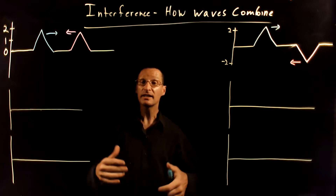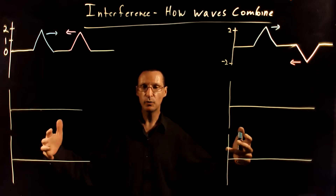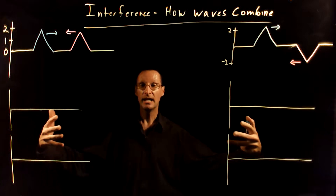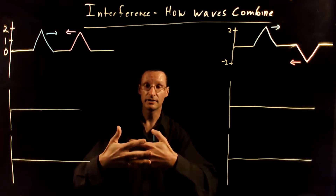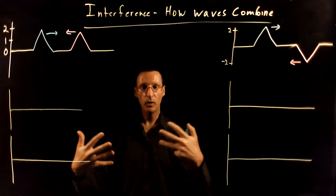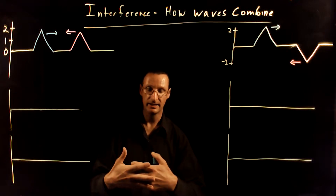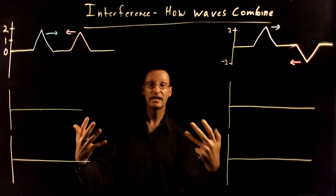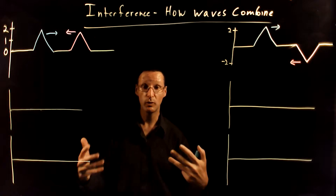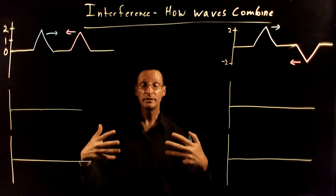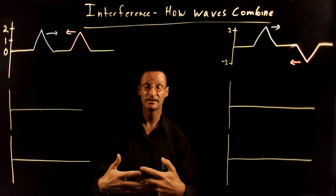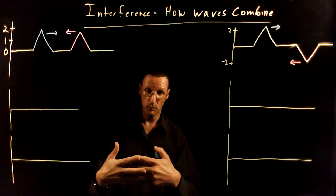Hey there, awesome physics students. Let's talk about what you do when you have two waves traveling in a medium, like a string, and those two waves meet each other. How do you combine those two waves, or how does the string decide what shape it's supposed to take? Whenever you have two waves that are overlapping and you need to combine them, we say that the two waves are interfering — that's wave interference. We use the principle of superposition to add the two waves, which tells us you add the waves point by point.